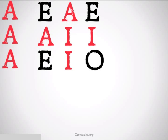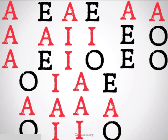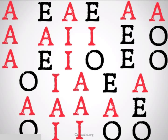We can also see this if we look at all of the valid moods — we're not talking about figures, just the moods right now, and there are only 11 of them. We see that in all of these, there is at least one affirmative premise, which I have highlighted in red.